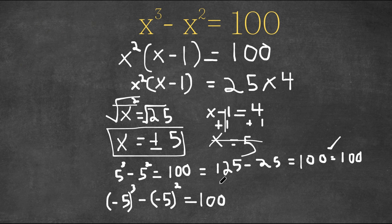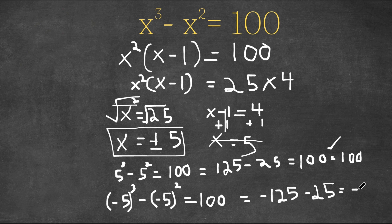Now, negative 5 to the power of 3, well, a negative to the power of an odd number is still going to be negative, and 5 to the power of 3 is 125. So this would be negative 125 minus negative 5 squared is 25, and negative 125 minus 25, well, that's negative 150. And that is not equal to 100, so this is rejected.